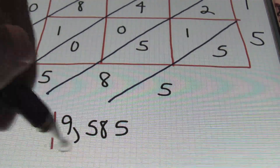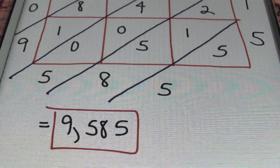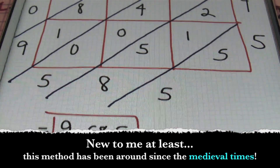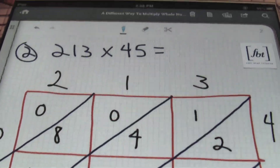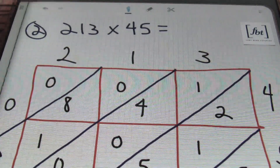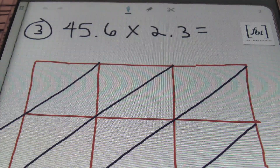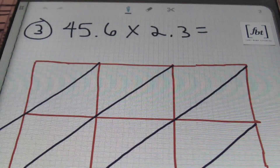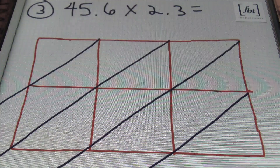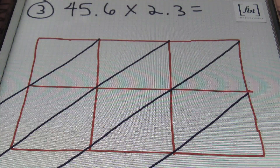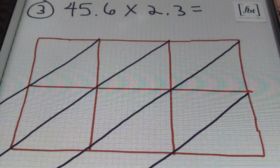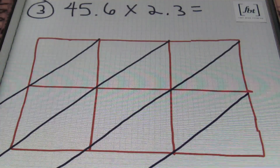Let's go ahead and put a red box around that answer. So I'm loving this method, ladies and gentlemen — it's definitely an alternative to regular multiplication. That was problem number two: 213 times 45. Next, I want to show you some problems that involve decimals. I didn't fully set this up so I could show you exactly how to do it. Notice that I have three digits in my first number, 45.6, so I have three columns. My second value is 2.3, which is two digits, so I have two rows.